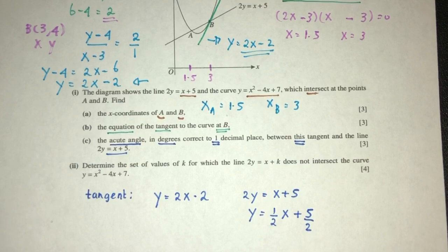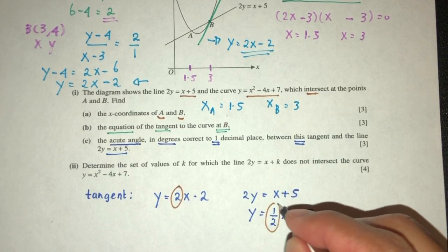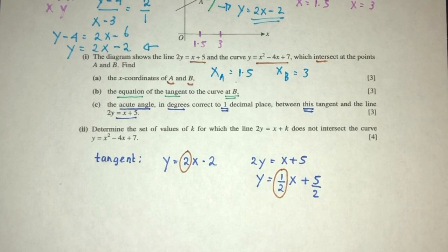Now, you can see for this tangent, the gradient was 2, and for this line, the gradient was half. So, we have to use a gradient to find the angle.